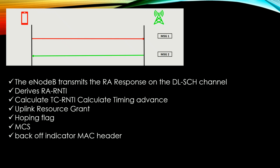For Message 2, the RAR window size from SIB2 parameters will be used. The RA response window size will determine the size of the response.